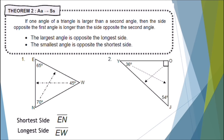For number 2, let's identify the shortest side. Our smallest angle is angle Y, which is 36 degrees, and the opposite side to it is line segment JO. Therefore, our shortest side is line segment JO. For our longest side, the largest angle is angle O, which is 90 degrees, and the opposite side to it is line segment JY. Therefore, our longest side is line segment JY.